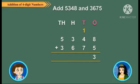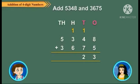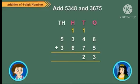Adding tens. Then adding the hundreds: 3 hundreds plus 6 hundreds plus the carried-over 1 is equal to 10 hundreds, which is 1 thousand plus 0 hundreds. Carry over 1 to the thousands column and write 0 under the hundreds column.